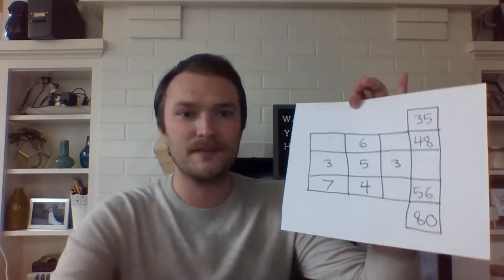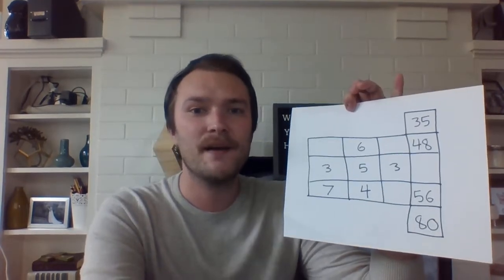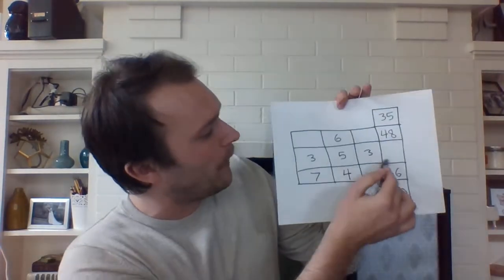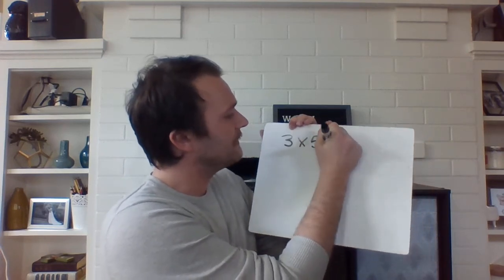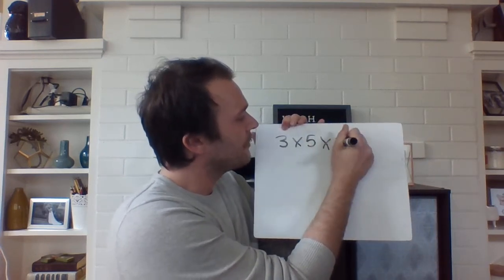So what I want to start with is I want to look at this row right here, the one in the middle where we've got three, five, and three. And we can start by doing some multiplication to figure out what number is going to be in this blank right here. So I'm going to write those numbers down and then we're going to take a closer look at multiplying those all together. So I know that row is three times five times three.